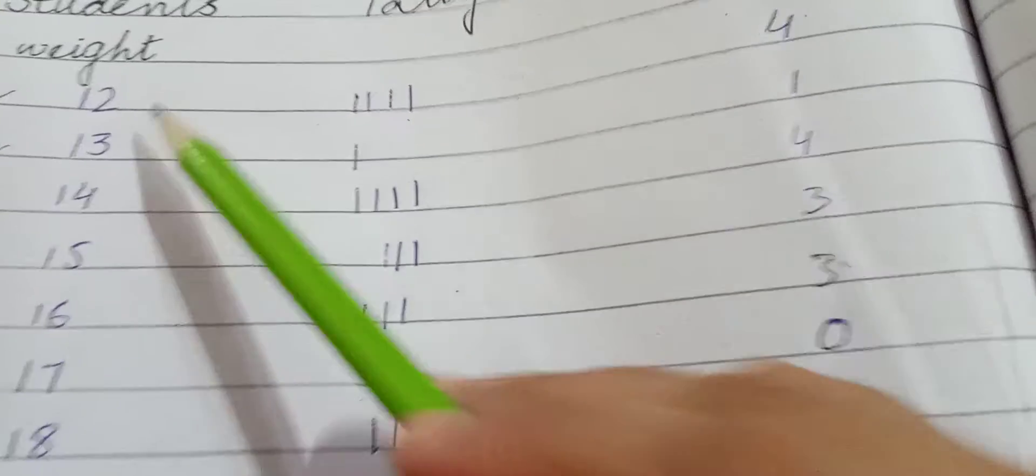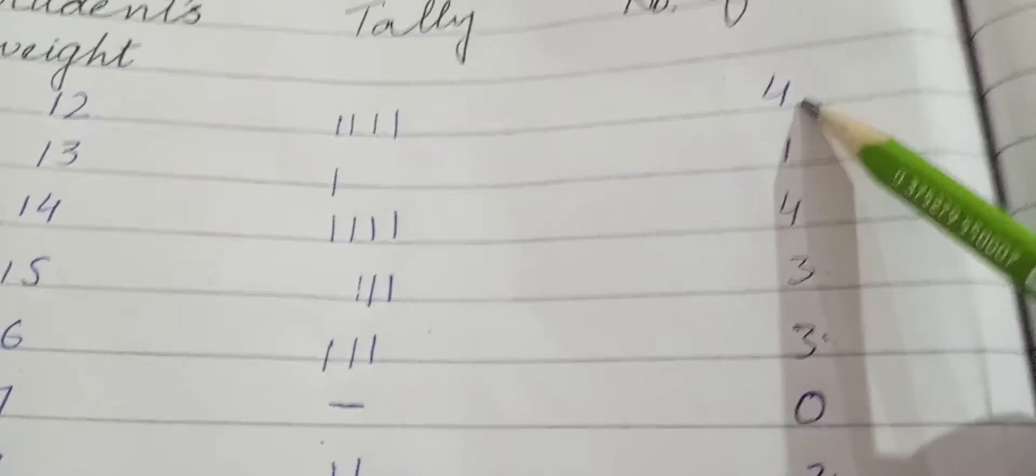First of all, what is given here? When students' weight was 12, how many times it was? 4 times.